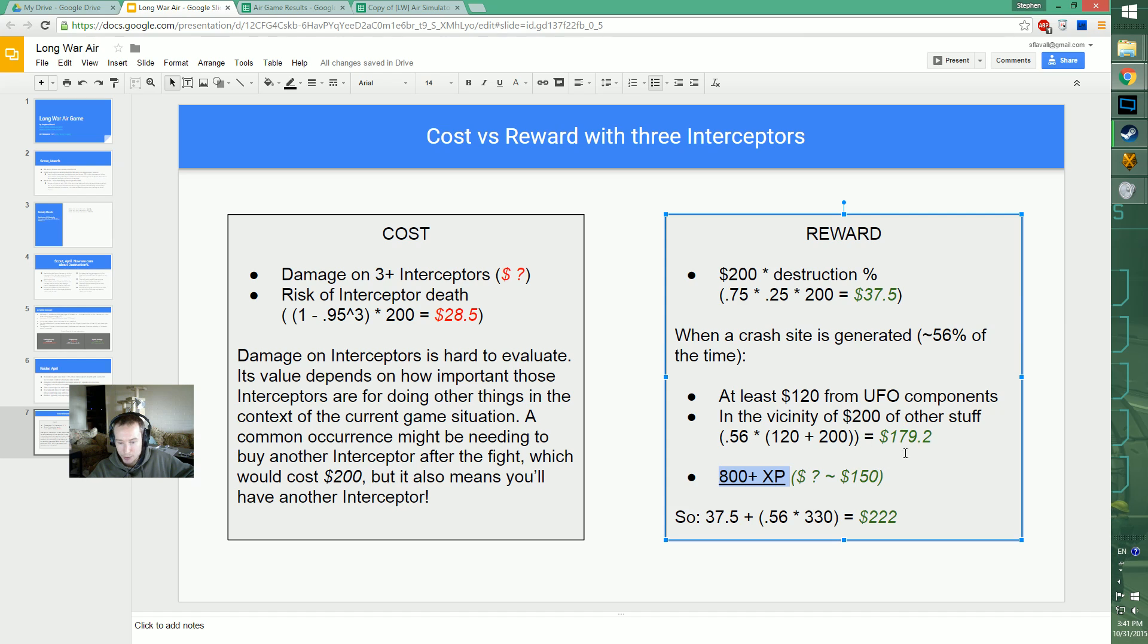an expectation of $222 worth of stuff, including putting a dollar value on experience and on alloys and things, when you're fighting a Raider with three interceptors ready to go, versus the $28.50 in clear costs and perhaps being forced to buy another interceptor or two earlier than you'd want to.